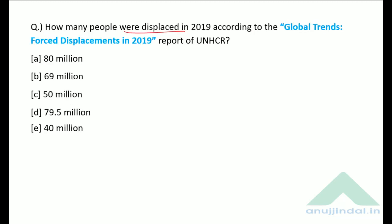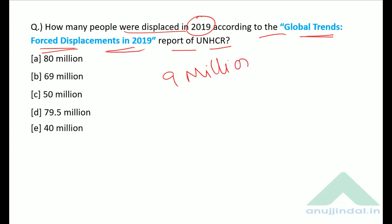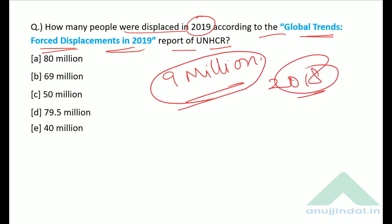How many people were displaced in 2019 according to the UNHCR Global Trends Forced Displacement in 2019 report? Displacement increased by 9 million compared to 2018. In total, 79.5 million people were displaced in 2019 according to this report.